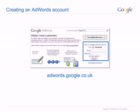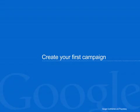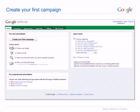Once you have set up your account, you will be prompted to create your first campaign and submit billing details. These are essential steps to get your ads up and running. Let's create your first AdWords campaign and I'll give you some tips along the way to help you set up a winning campaign. When you first log into your account, you will see this screen. Click on 'Create your first campaign' to get started.